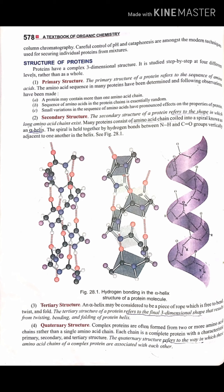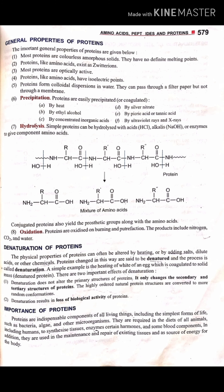The secondary structure describes the local shape of the long amino acid chain. The tertiary structure is the final three-dimensional shape of the protein — the result of twisting, bending, and folding of the polypeptide. The quaternary structure refers to how multiple amino acid chains in a complex protein associate with each other.